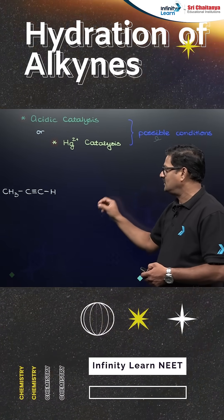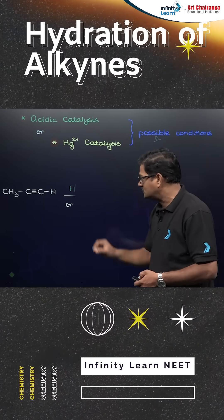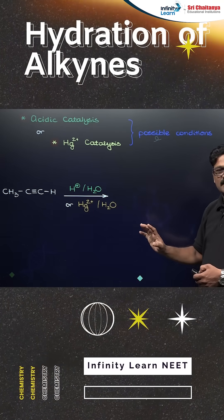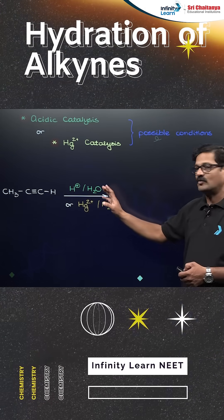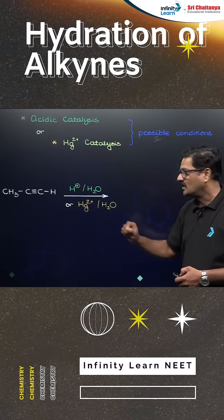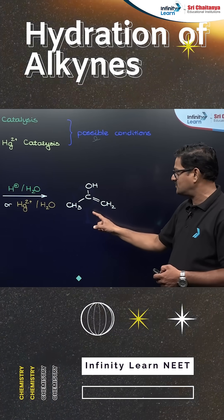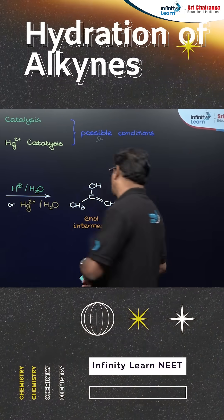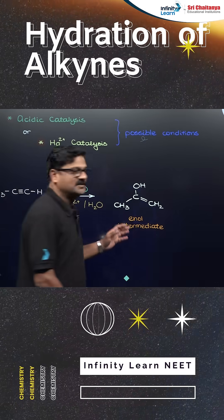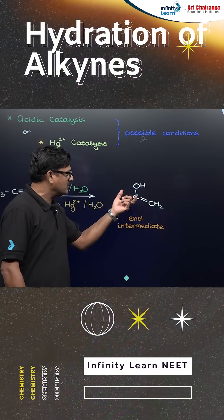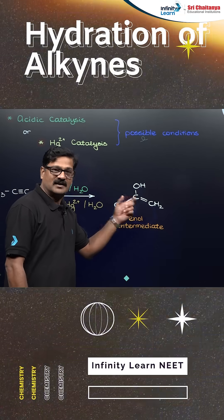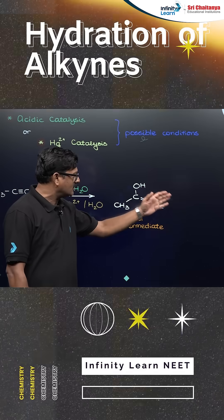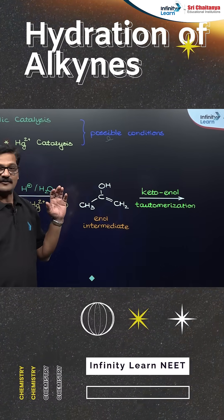Propyne with dilute H2SO4 and HgSO4 is treated so that a water molecule is added according to Markovnikov's rule. You are going to see the formation of an enol. This enol undergoes tautomerization because C=C is weaker and C=O is stronger, so it immediately undergoes keto-enol tautomerization.